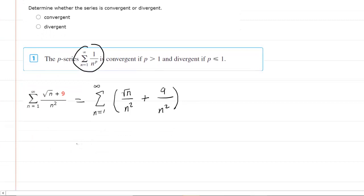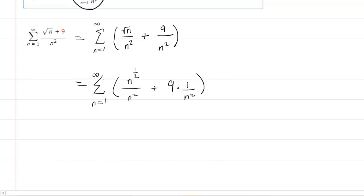Next we simplify each series. For the first series, we rewrite the square root of n as n to the power of 1/2. For the other series, we write it as 9 times 1 over n squared. We need to divide n to the 1/2 by n squared.